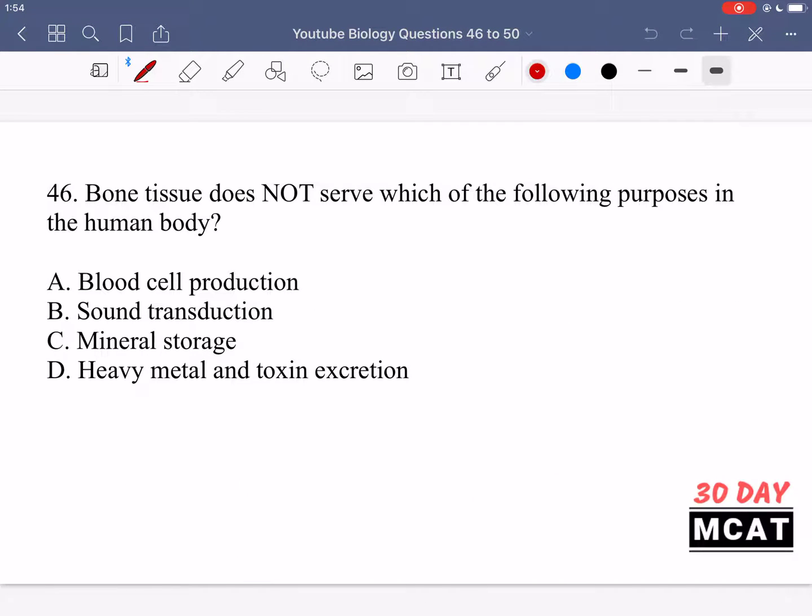Question 46 is saying bone tissue does NOT serve which of the following purposes in the human body? It serves three out of these four functions and one it does not. Blood cell production, does bone tissue have this as part of its functions? Yes, it does. So the bone marrow is a site of blood cell production. So yes, bone tissue does have this purpose.